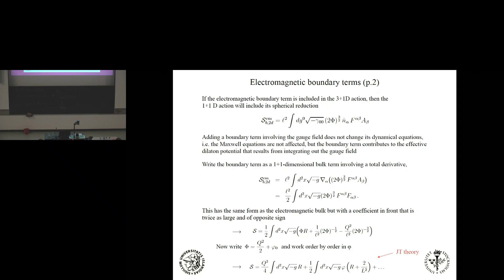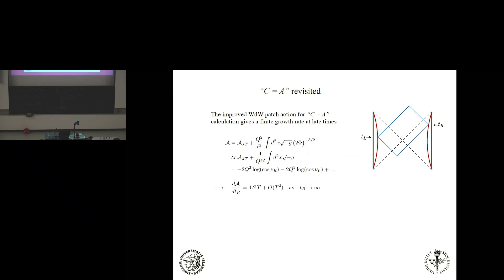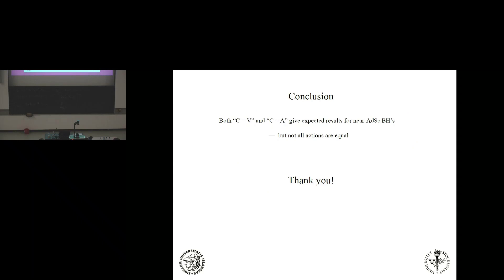Perhaps we shouldn't be surprised that the plain JT model doesn't give a reasonable answer on the Wheeler-DeWitt patch, because the Wheeler-DeWitt boundaries are not real physical boundaries — there's no reason to constrain charge to be fixed there. If you add the boundary term to get to Jackiw-Teitelboim and work out its contribution to the action, it precisely flips the sign back to how you want it. Therefore the remaining action for the dilaton gives you the right behaviors. The bottom line is that both of these conjectures can be made to work — but not all actions are equal.